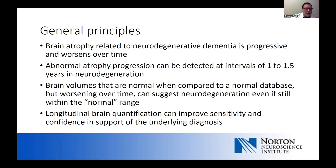That's particularly true of hippocampal volumes, which with normal aging tend to shrink about one percent per year, but more in the four to five percent per year range in Alzheimer's disease. Longitudinal brain quantification can improve sensitivity and help provide confidence in your diagnosis of the underlying pathology.